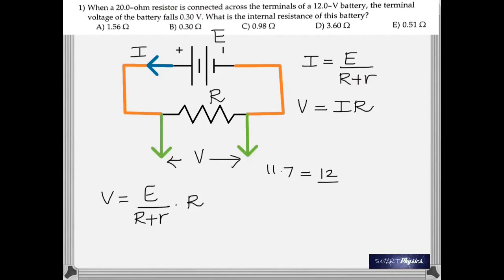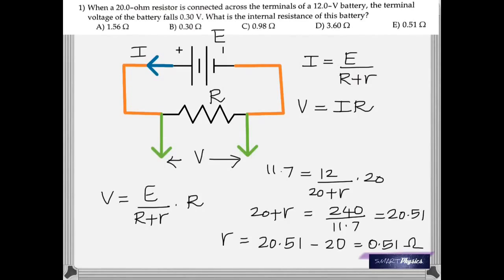that is given as 11.7 because it says the voltage falls 0.30. So, it is 12 minus that much. And then, on calculation, you get 0.51 ohm as the internal resistance.